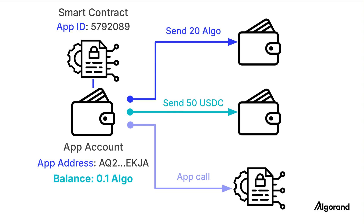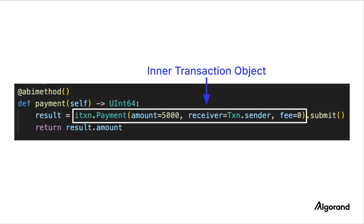Just like any other Algorand account, application accounts follow the same minimum balance requirements. So to send transactions, you must fund the application account with at least 100,000 microalgos, or 0.1 algo, by sending a payment transaction to the application account.